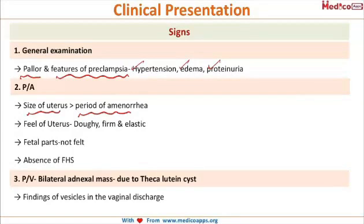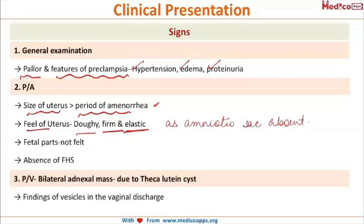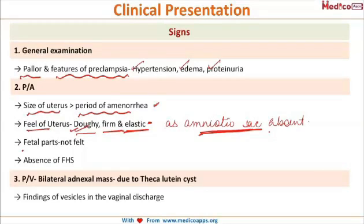On per abdominal examination, the size of the uterus will be more than the period of amenorrhea in most cases, and sometimes it can be corresponding also. The feel of the uterus will be doughy, firm, and elastic, because in contrast to normal pregnancy where an amniotic sac is present, the amniotic sac is absent in cases of molar pregnancy.